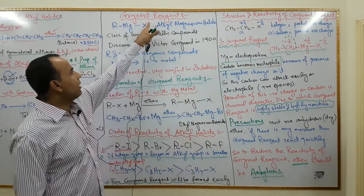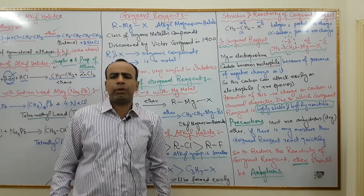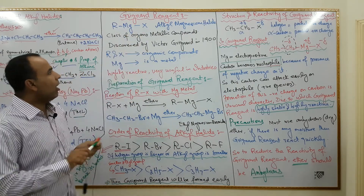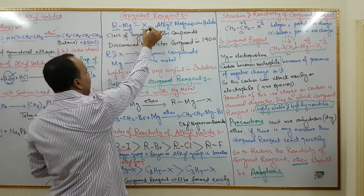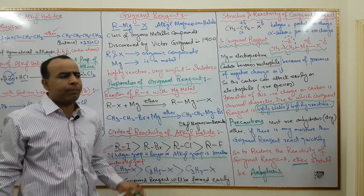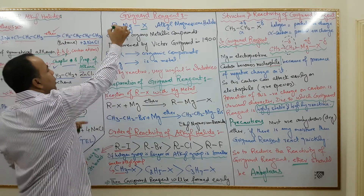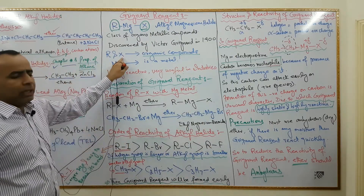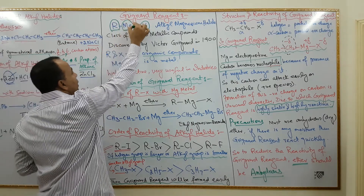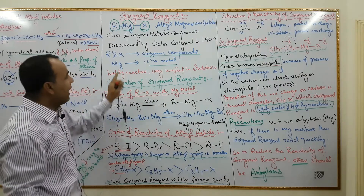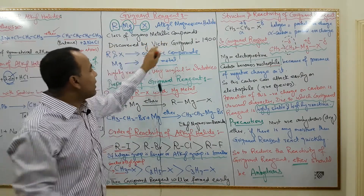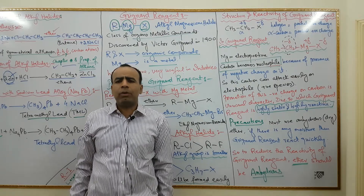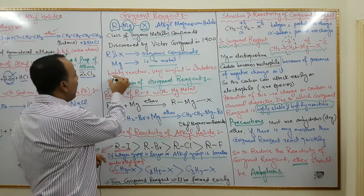Now the next very important topic is Grignard reagent — it is an extremely important long question. Grignard reagent is represented as RMgX: R for alkyl, Mg for magnesium, and X for halide. It is called alkyl magnesium halide. Both R and X are organic components, while the magnesium in the center is a metal. So we can say that Grignard reagent is a class of organometallic compounds.